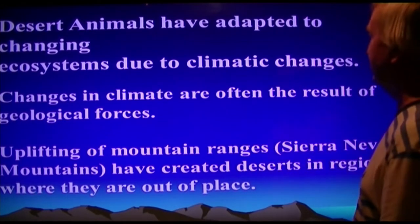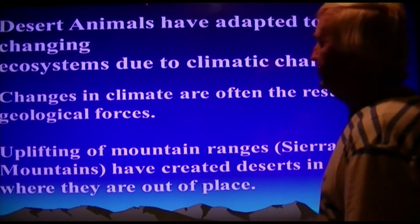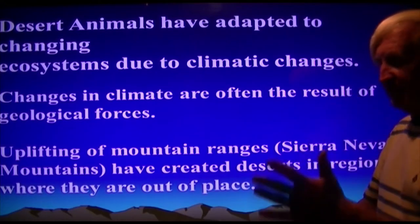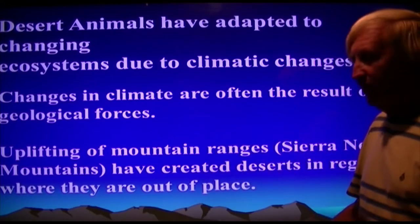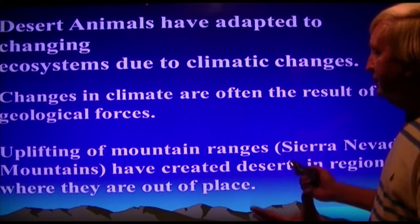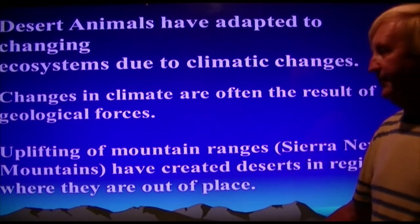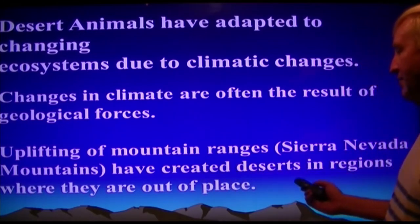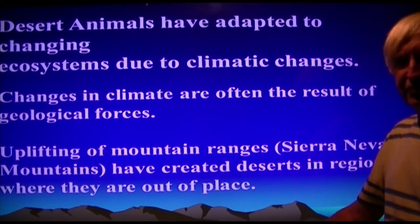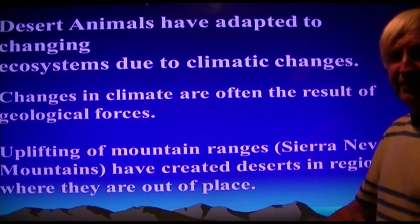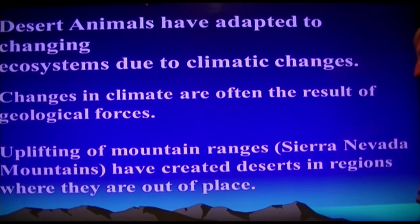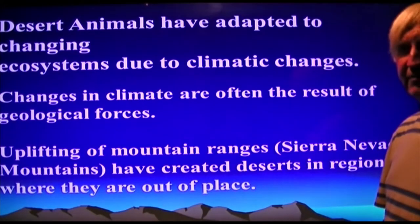Desert animals have adapted to the changing system also. Climate has changed over the past 12,000 years — the last glaciation ended about 12,000 years ago and from then until now, climate has been warming. These ecosystems have adapted to that gradual warming. Uplifted mountain ranges like the Sierra Nevada can create deserts. Plants and animals have gone through a great deal of adaptation — as Charles Darwin said, it all comes down to survival of the fittest.